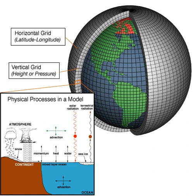The CLIMBER-3 model uses a 2.5-dimensional statistical dynamical model with 7.5-degrees by 22.5-degrees resolution and a time step of one half a day. An oceanic submodel is MOM-3 with a 3.75-degrees by 3.75-degrees grid and 24 vertical levels. One-dimensional radiative-convective models were used to verify basic climate assumptions in the 1980s and 1990s.